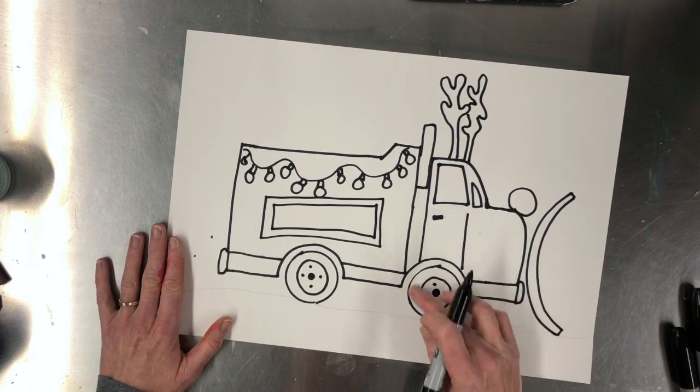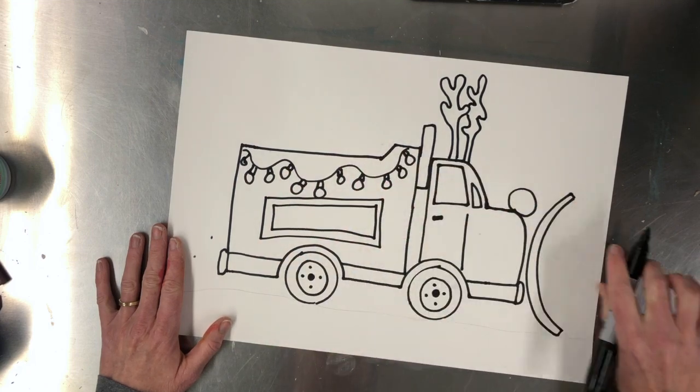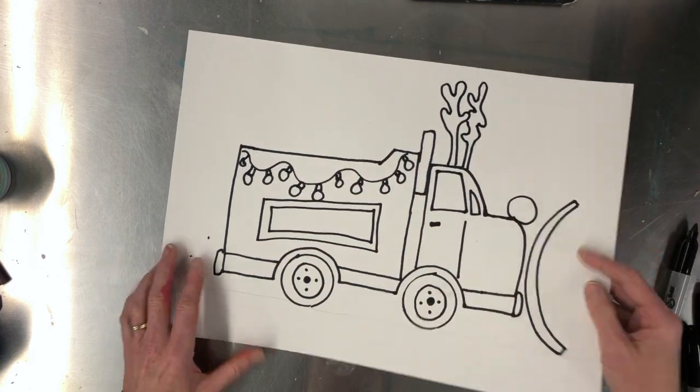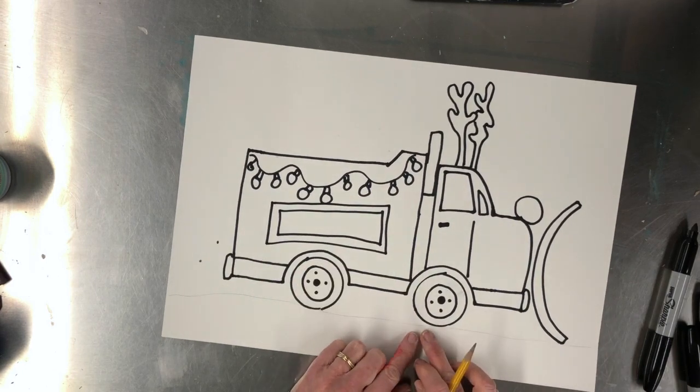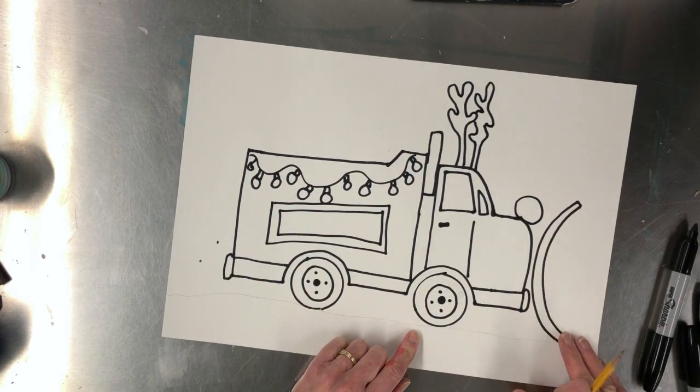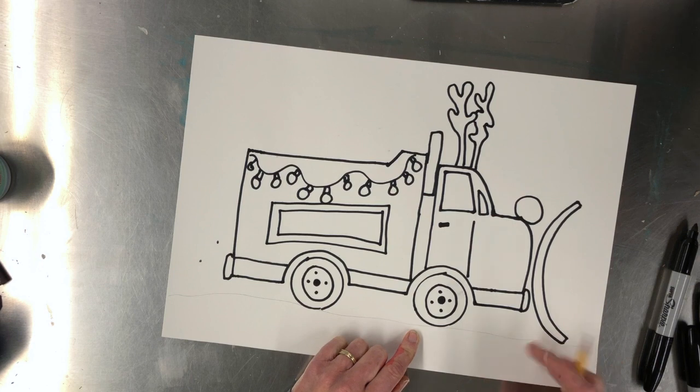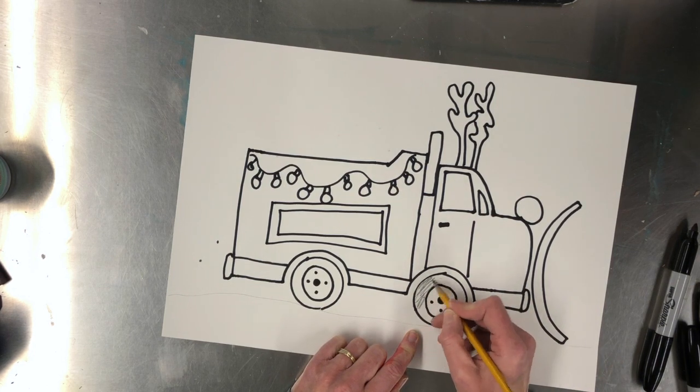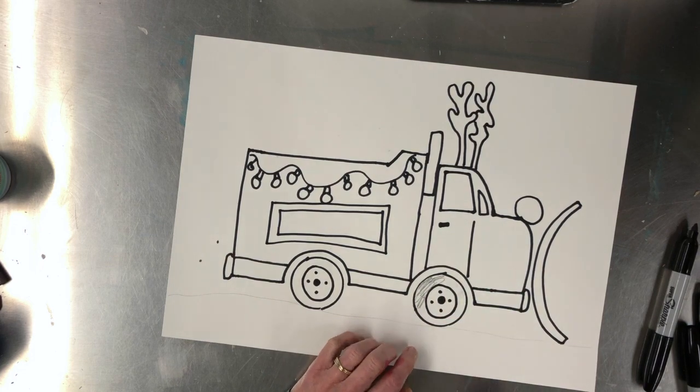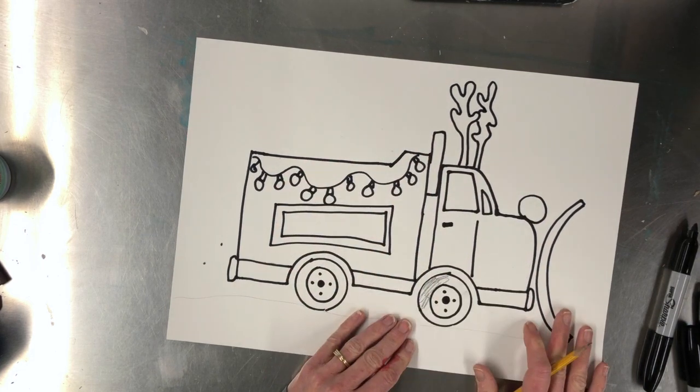You're going to use your China marker to, after you draw your truck, if you just have pencil, you want to use a China marker and go over all your lines. You could fill in your tires with that China marker so they're black. And then you're going to watercolor this in.